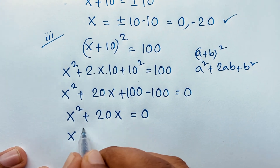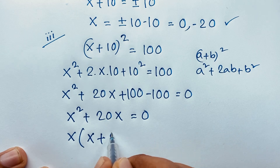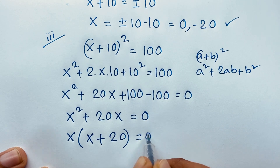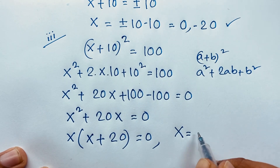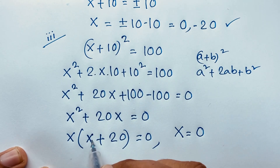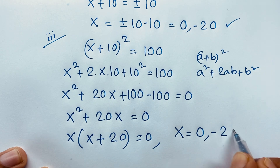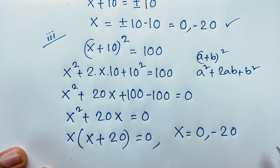You can see that x is common, so x(x + 20) = 0. Then x = 0, or x + 20 = 0, giving x = −20.